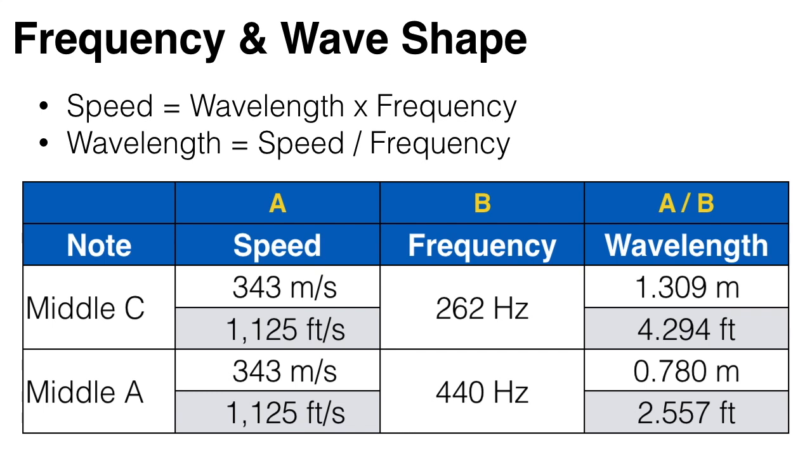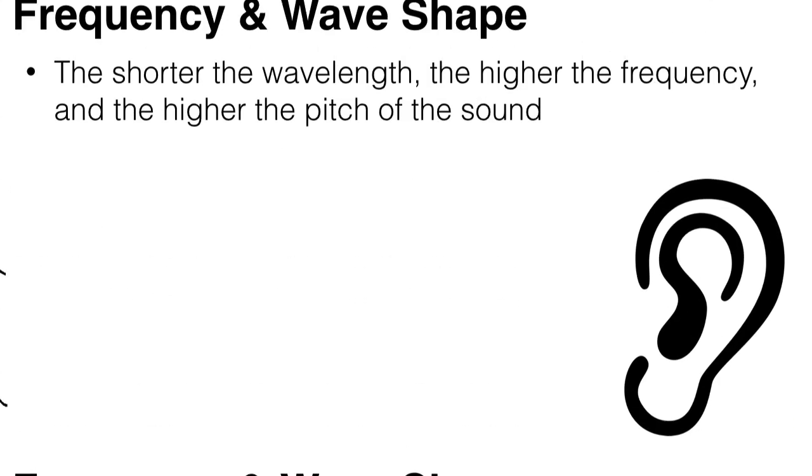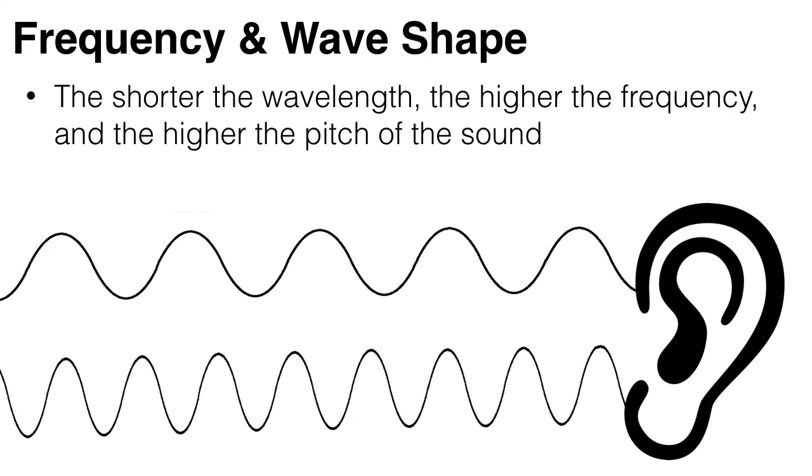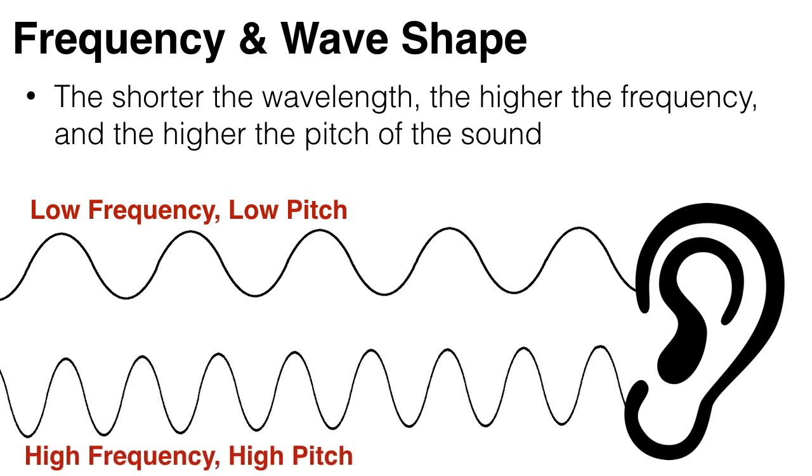Similarly, the A above middle C is 440 hertz, which means its wavelength is 0.78 meters. So the shorter the wavelength, the higher the frequency, and the higher the pitch of the sound.